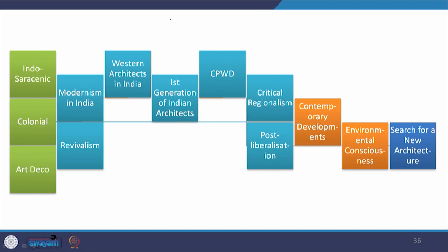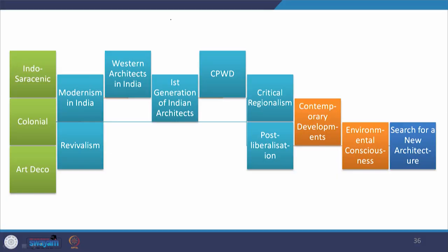We will begin with Indo-Saracenic, colonial, and Art Deco pre-independence, moving on to modernism in India and revivalism, then Western architects in India, the first generation of Indian architects, the contribution of CPWD, critical regionalism or regional modernism, post-liberalization era, contemporary developments, environmental consciousness, and finally the search for a new architecture in India. This is the general profile of what we will go through this semester.